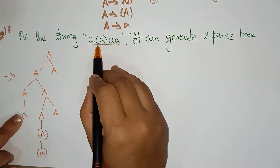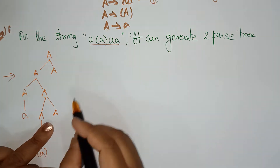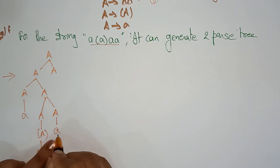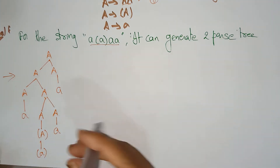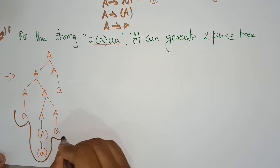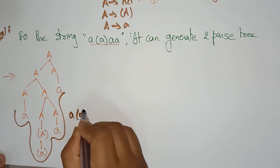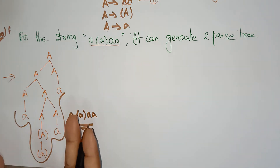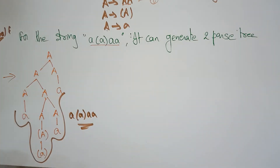I am replacing A with the terminal a, and here is also a. Did I get the string? Yes — I derived the string a within parentheses a a. So this is the first leftmost derivation. The same string can be represented in another form — let's see that form.